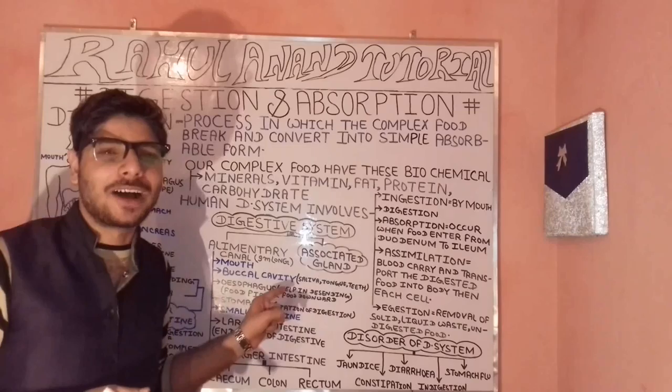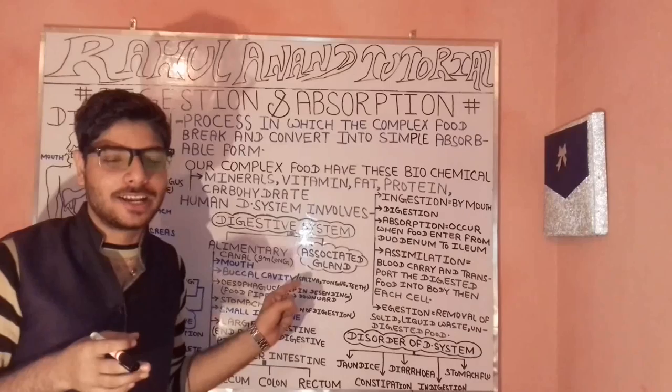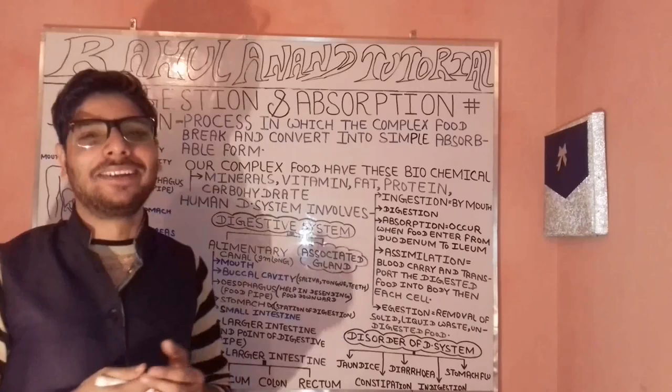In ejection, the solid waste, liquid waste, and undigested food particles or waste particles should be excreted from our body to maintain healthy status and charge our immune system. The digestive system is divided into two broad categories: the alimentary canal and the associated glands.